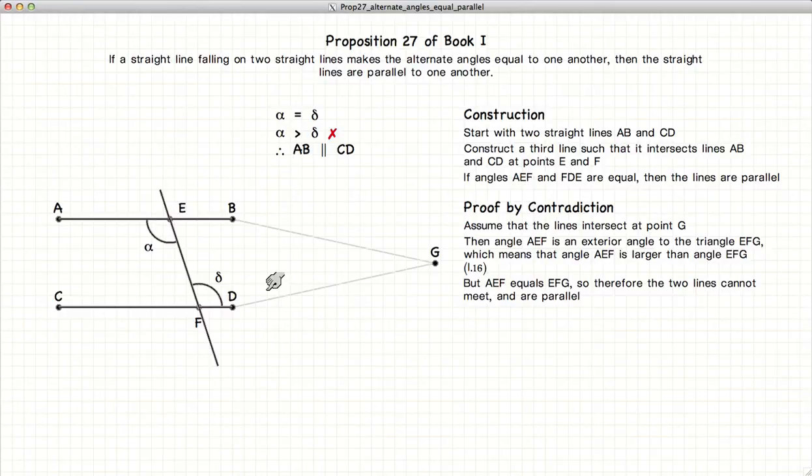And consequently, AB and CD never meet at a point G. So, thus we have demonstrated that AB and CD are parallel lines if the alternate angles are equal.